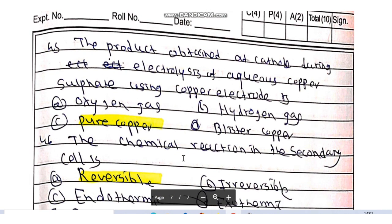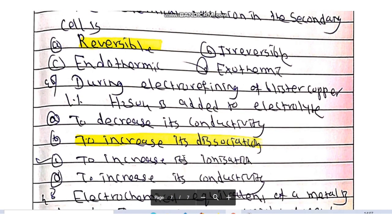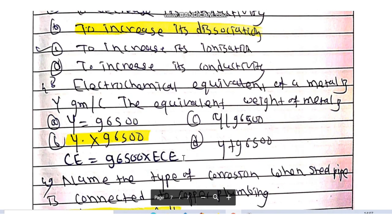The chemical reaction in the secondary cell is reversible. During electro-refining of blister copper, the percentage of H2SO4 added to the electrolyte is to increase its dissociation.